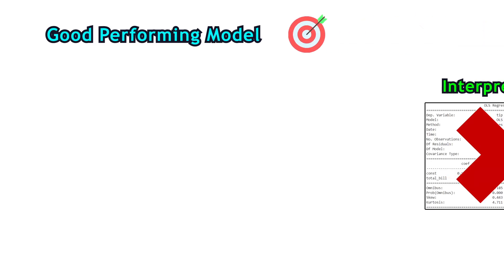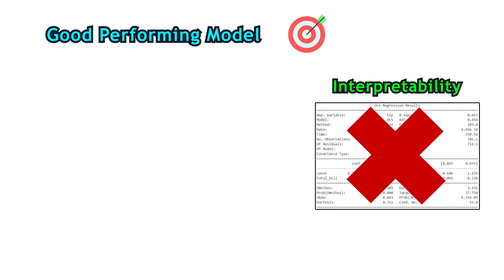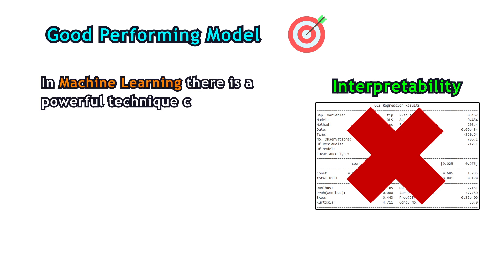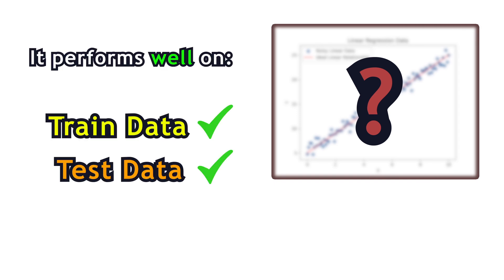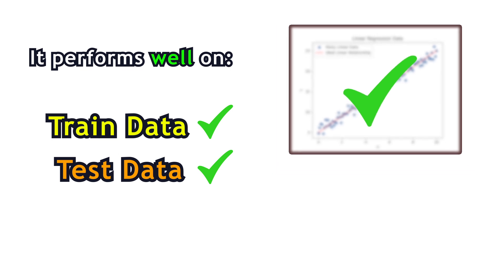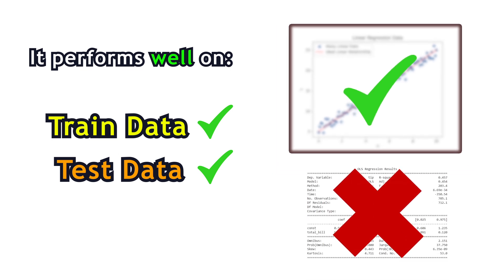However, if you target a good-performing model and you care less about the interpretability, then in machine learning there is a powerful technique to check the reliability and the performance of the model called train-test split. If you run a linear regression model and see that it performs well on both train and test sets, then you can probably use that model despite the violations. However, note that even with a good-performing model, you still can't interpret its statistical properties if there are violations.